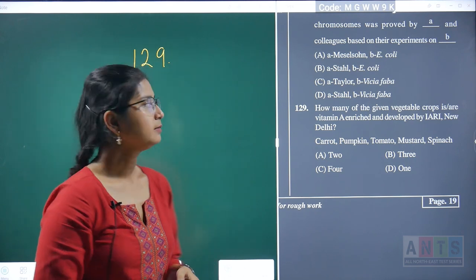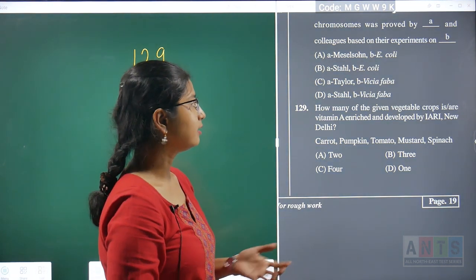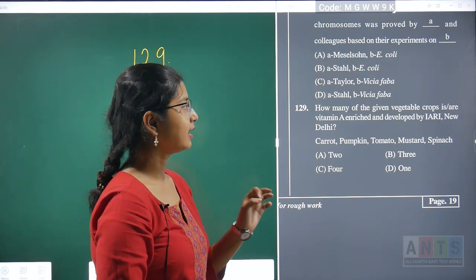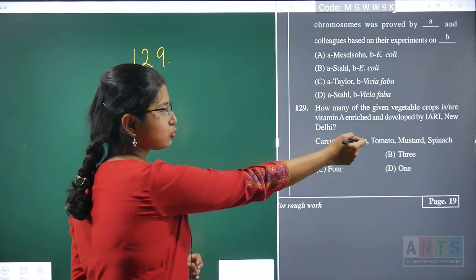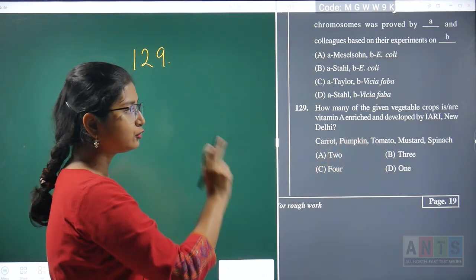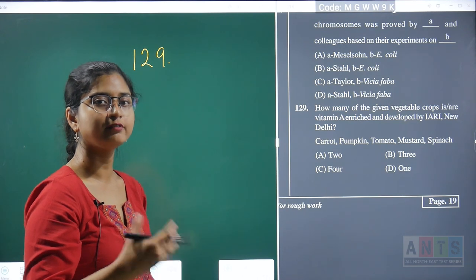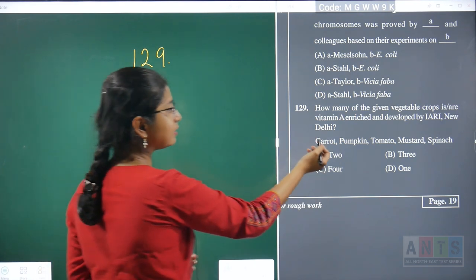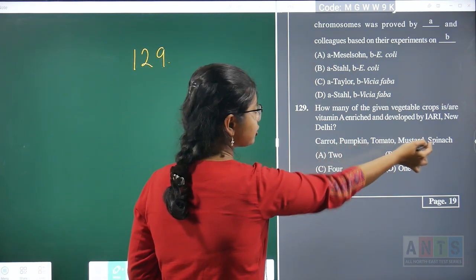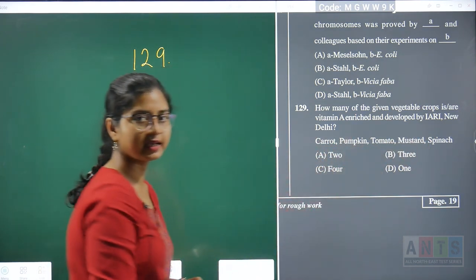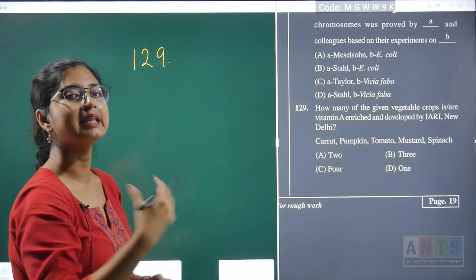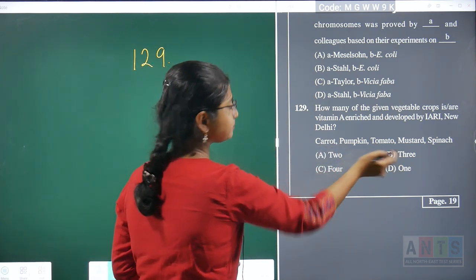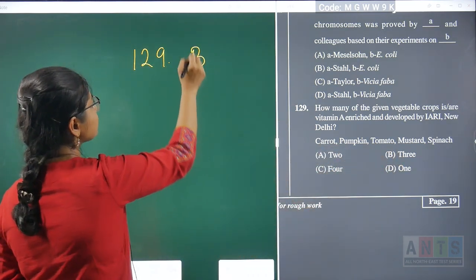Question 129: how many of the given vegetable crops are vitamin A enriched and developed by IARI, New Delhi? This is an example of biofortification. Three crops were developed by IARI with vitamin A enrichment: carrot, pumpkin, and spinach. Hence, question 129's correct answer is option B — three.